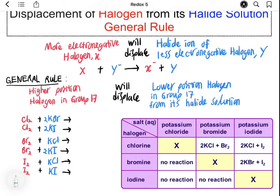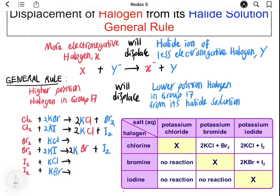As a general rule, a more electronegative halogen will displace the halide ion of a less electronegative halogen. In other words, a halogen in a higher position in Group 17 will displace a lower-position halogen from its halide solution. Now let's look at the reactions between the halogens chlorine, bromine, and iodine with potassium chloride, potassium bromide, and potassium iodide.